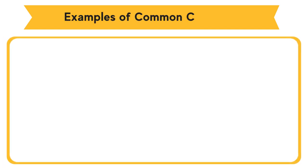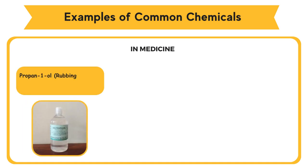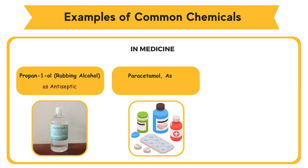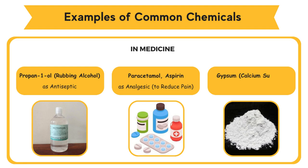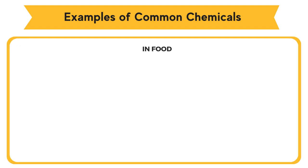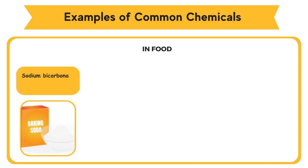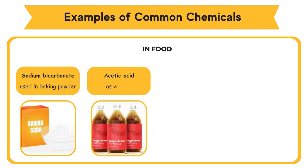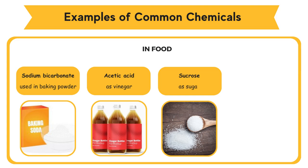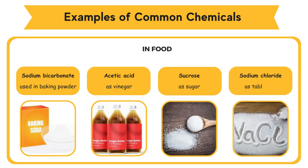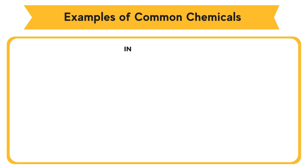Examples of common chemicals in medicine. In food: sodium bicarbonate, used in baking powder; acetic acid, as vinegar; sucrose, as sugar; sodium chloride, as table salt.